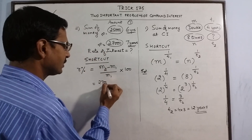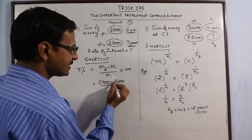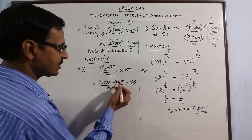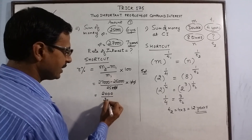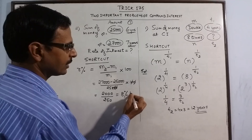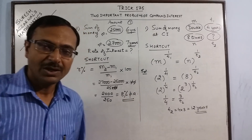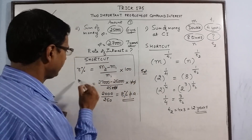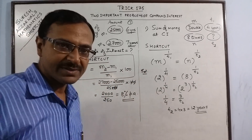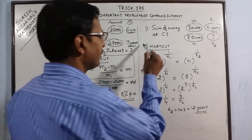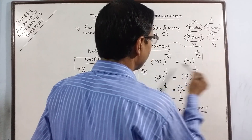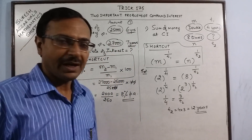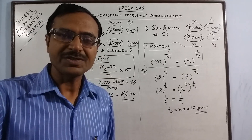Substituting the values: M2 is 27,000, M1 is 25,000. So R = (27,000 − 25,000) / 25,000 × 100. Two zeros cancel out, giving 2,000 / 250 = 8 percent per annum, which is your rate of interest. No complicated formulas or calculations — just one little shortcut and you solve the problem in 4 to 5 seconds. Keep learning these shortcuts for compound interest and come out successfully in competitive exams. Share and subscribe to the channel if you like it.